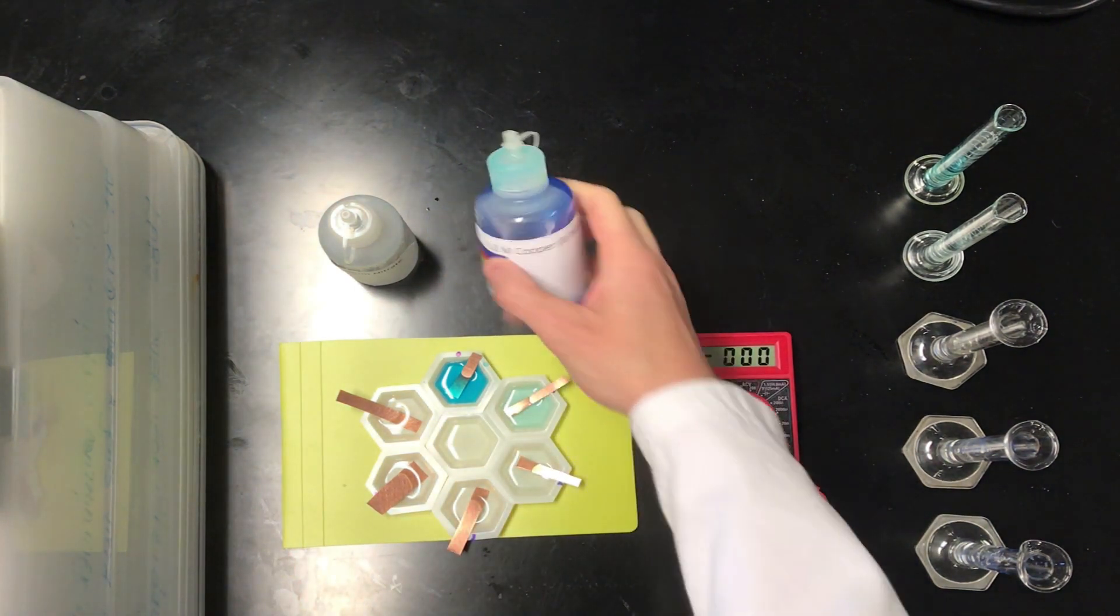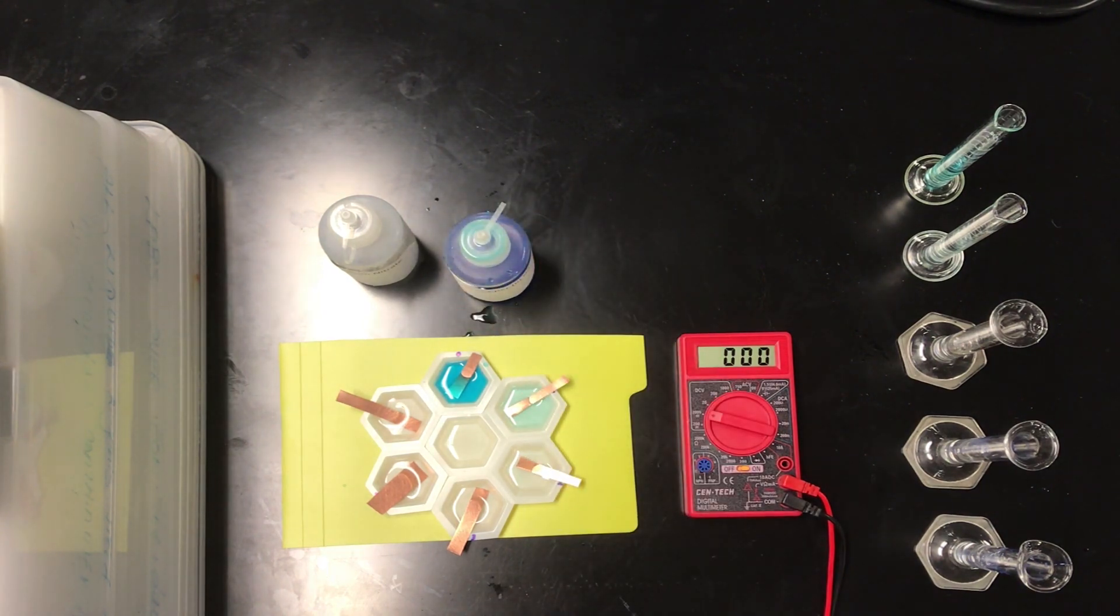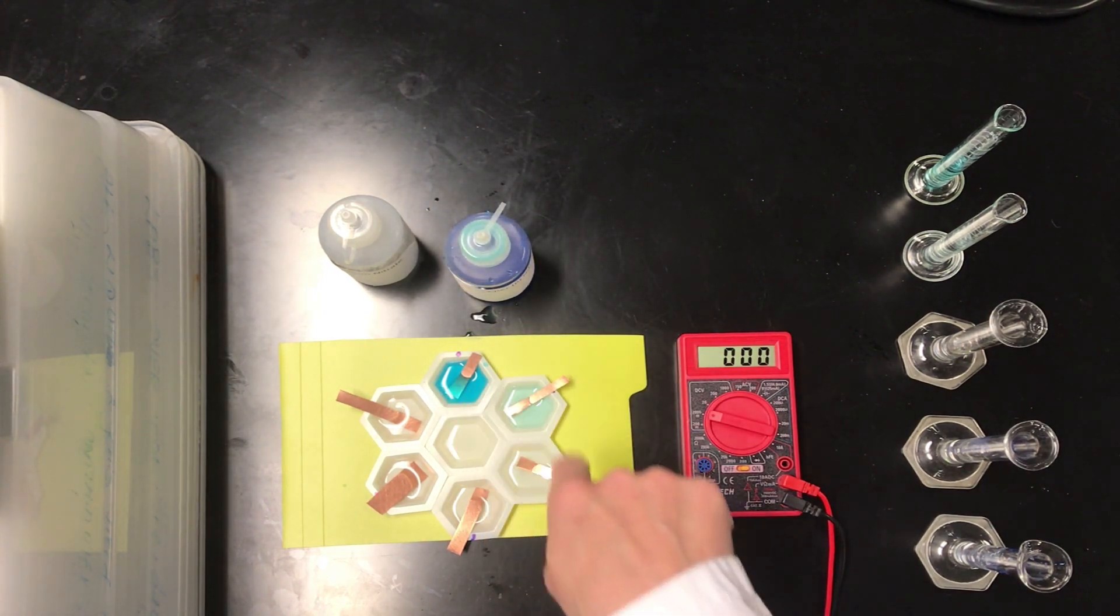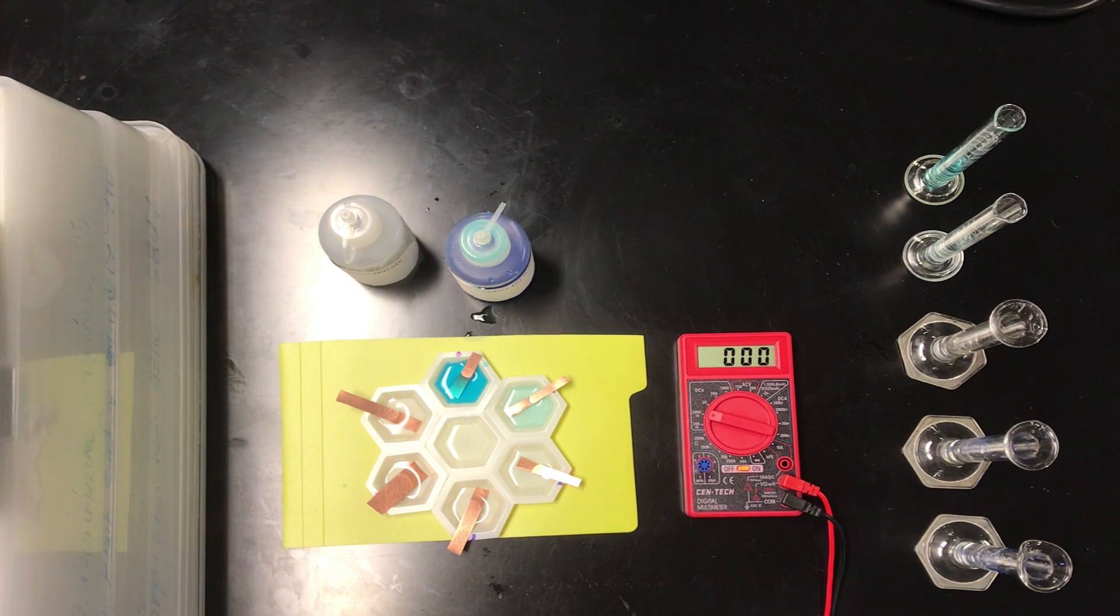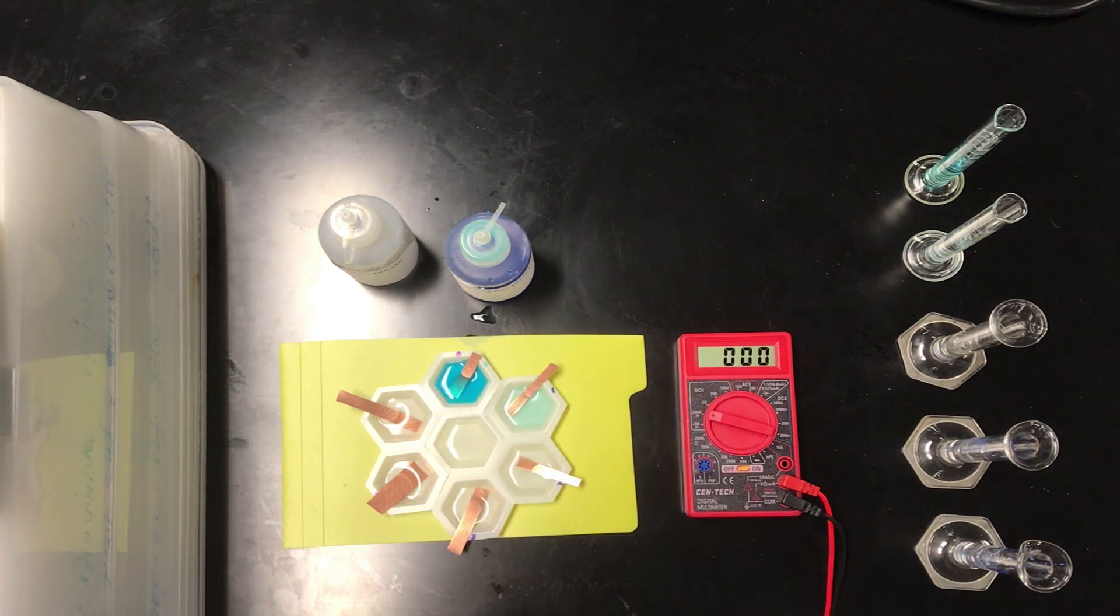The dark blue solution that you see is a 1.0 mole per liter solution of copper to nitrate, and each of the other solutions also contain copper to nitrate in different concentrations. So that first one is 1.0 or 10 to the 0 moles per liter.